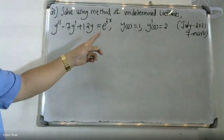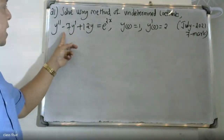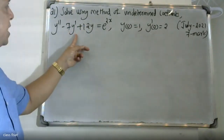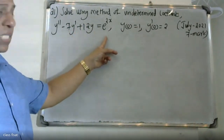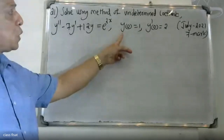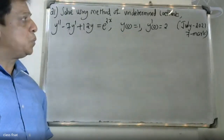Using the method of undetermined coefficients: y'' minus 7y' plus 12y equals e^(2x), with initial conditions y(0) equals 1 and y'(0) equals 2.